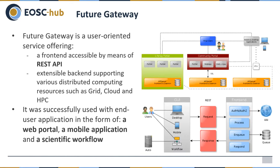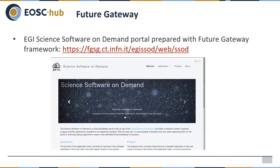The first component is the Future Gateway. It is one of the possible entry points to the orchestration layer. It has a front-end accessible by means of a REST API, and an extensible backend that supports different distributed computing infrastructures such as grid, cloud, or high-performance computing. It was successfully used with different end-user applications, for example a web portal, a mobile application, or a scientific workflow. As an example, you can access the EGI Science Software on Demand, which has been deployed on top of the Future Gateway framework.